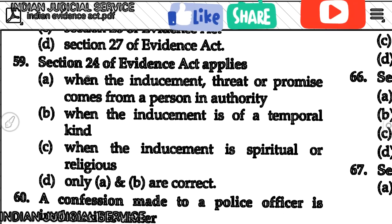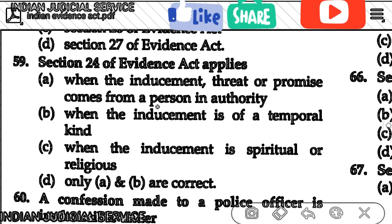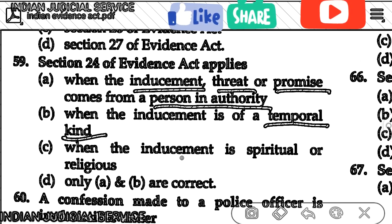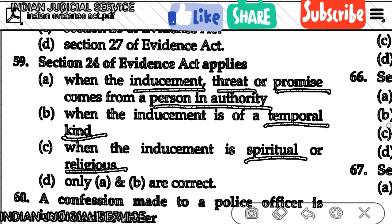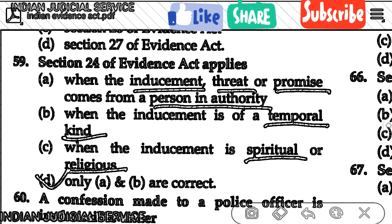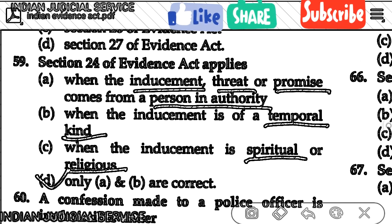Question number 59: Section 24 of the Evidence Act applies when the inducement, threat, or promise comes from a person in authority, and when the inducement is of a temporal — meaning worldly — kind. If the inducement is of a spiritual or religious nature, it does not apply. The answer is option D — both A and B are correct: person in authority and temporal nature of inducement.